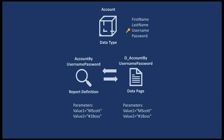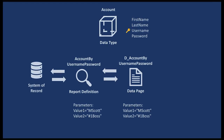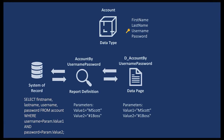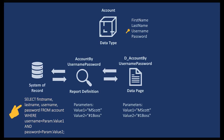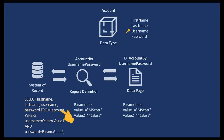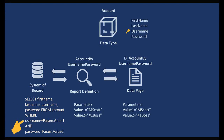We created two custom rules: one is a report definition and another one is the data page. Both of these rules have something called parameters — value1 and value2. Value1 is for the username and value2 is for the password. The purpose of these parameters is to check in the database if there is a record that matches these values. A report definition would make a query similar to: select first name, last name, username, and password from the account table where the username equals value1 and the password equals value2.